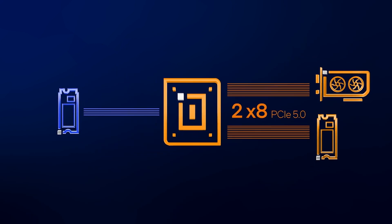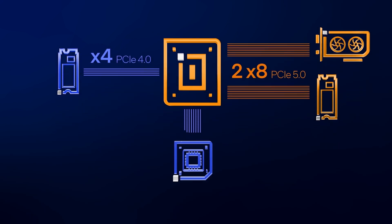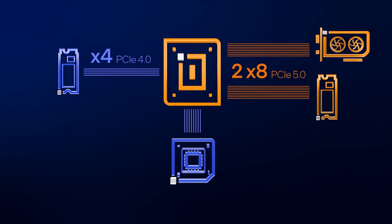Another PCIe 4.0 x4 link coming from the CPU gets dedicated to ultra-fast storage. That's all topped off with I/O coming from a separate PCH on the motherboard that shares a DMI 4.0 link to the CPU with 8 lanes worth of PCIe 4.0 bandwidth.